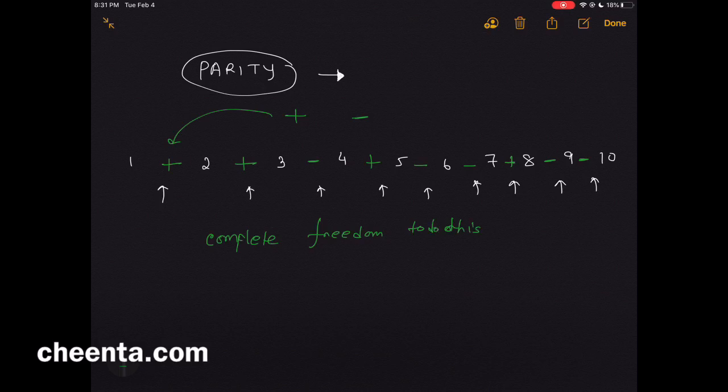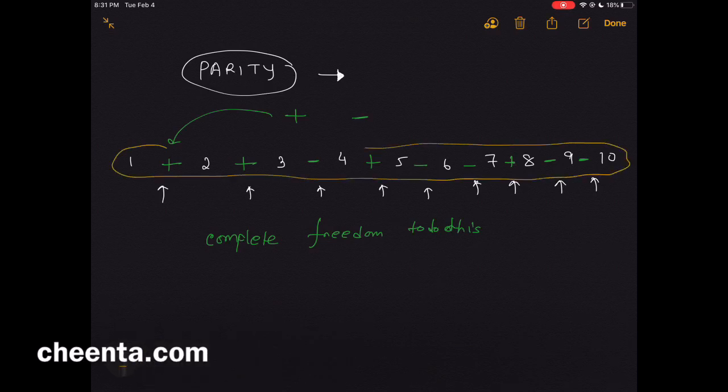The question is, after you have done that, is the final sum—whatever you get after computing this—can you make it ever zero? So can this be zero? That's the question.